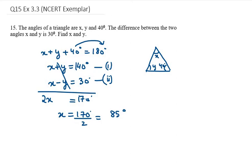Now we need to find the value for y. You can choose any equation. I'll take equation number 1: x plus y equals 140. Now x is 85 degrees, so 85 degrees plus y equals 140. Therefore, y will be 140 minus 85, which gives us 55 degrees.